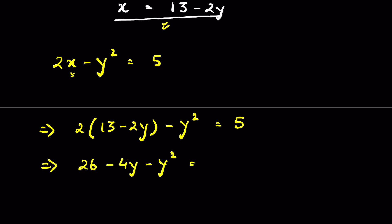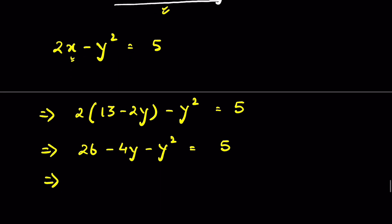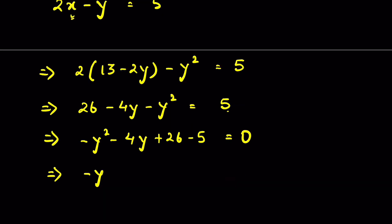Let's rearrange this equation: minus y squared minus 4y plus 26, and sending 5 to the left-hand side gives minus 5, equal to 0. So we have minus y squared minus 4y plus 21 equals 0. This is a quadratic equation.